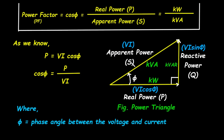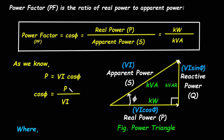The angle between the real power, the base, and the apparent power, the hypotenuse, is the phase angle, Φ. As we know from basic circuit theory, the formula for real power is P equals V times I times the cosine of Φ, where V is voltage and I is current. From this, we can rearrange the formula to solve for the cosine of Φ: cosine of Φ equals P divided by the product of V and I. Since apparent power, S, is equal to V times I, this confirms our earlier definition — power factor is real power divided by apparent power.